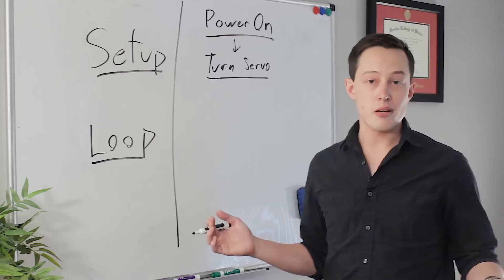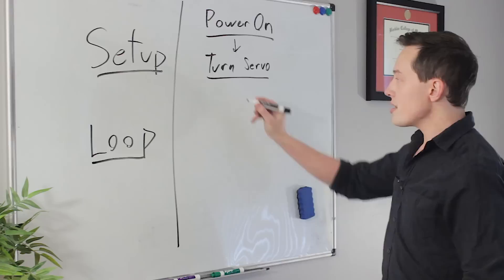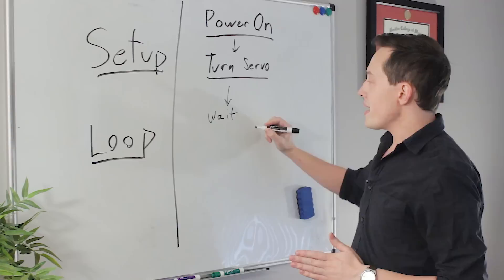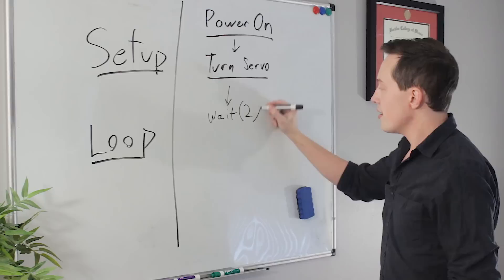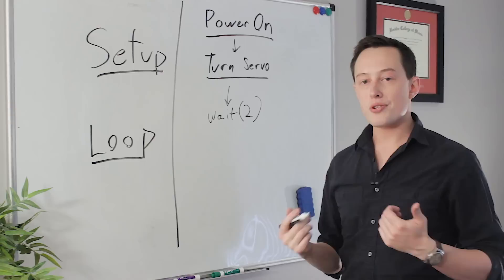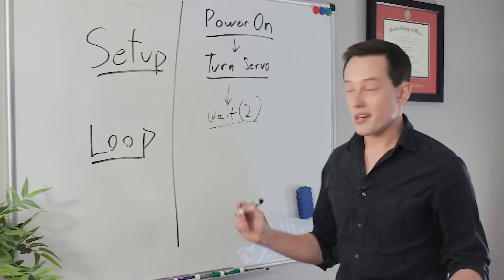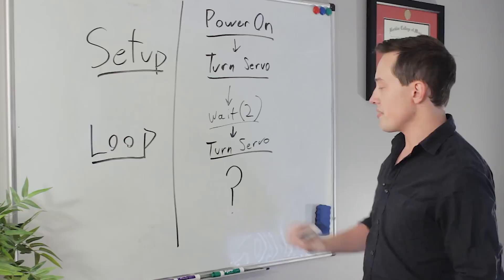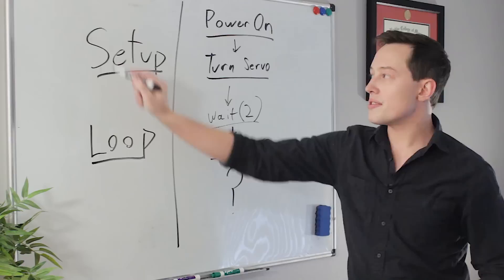Once we turn the servo, we don't want the drill to be on forever, so we have to rotate the servo back to release the trigger at some point. Before we do that, we have to think of this step-by-step as granularly as possible. So what if we put a function in here called wait with a parenthesis — I'll put two here, representing two seconds. So we turn the servo to turn on the drill, we wait for two seconds, and then we turn the servo back. This wait is just here to make sure we get enough drill motion. All of this stuff is running within the setup function of Arduino.